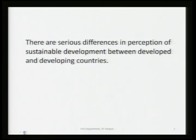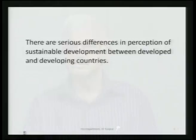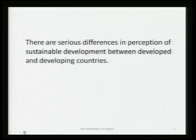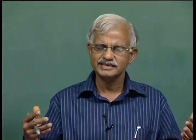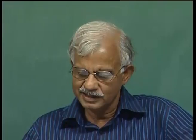It is obvious that all those who have read anything about the Kyoto Protocol know that there are serious differences in perception of sustainable development between developed and developing countries. Developed countries are mostly led by the United States, and developing countries are led mostly by India and China. European countries are mostly with the United States, while Latin American and African countries are mostly supporting the Indian and Chinese position on development and environment.